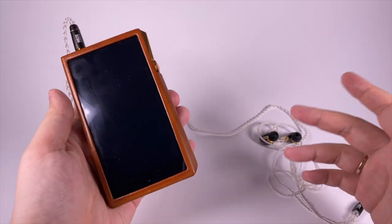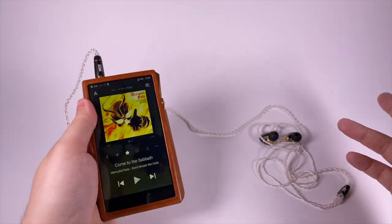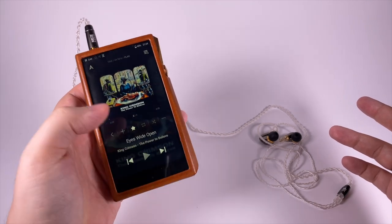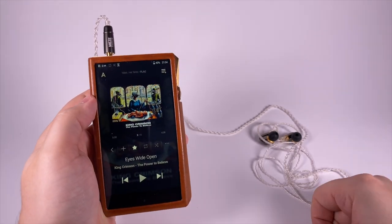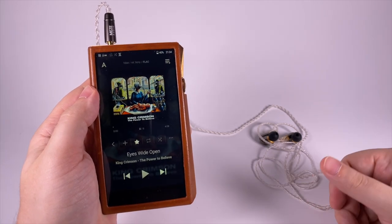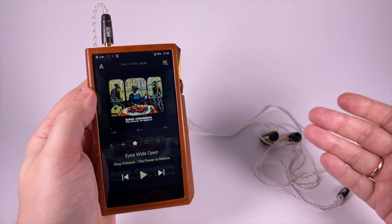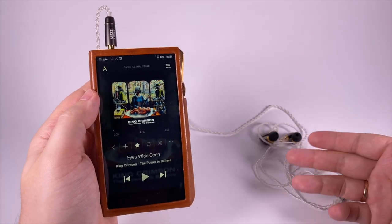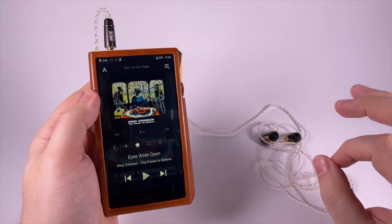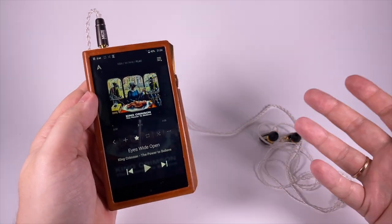First example will be King Crimson, Eyes Wide Open. Lots of different percussions and lots of things that go to the treble area, typical for progressive rock groups. It's nicely recorded and these earphones played really well with a good sense of real instruments.